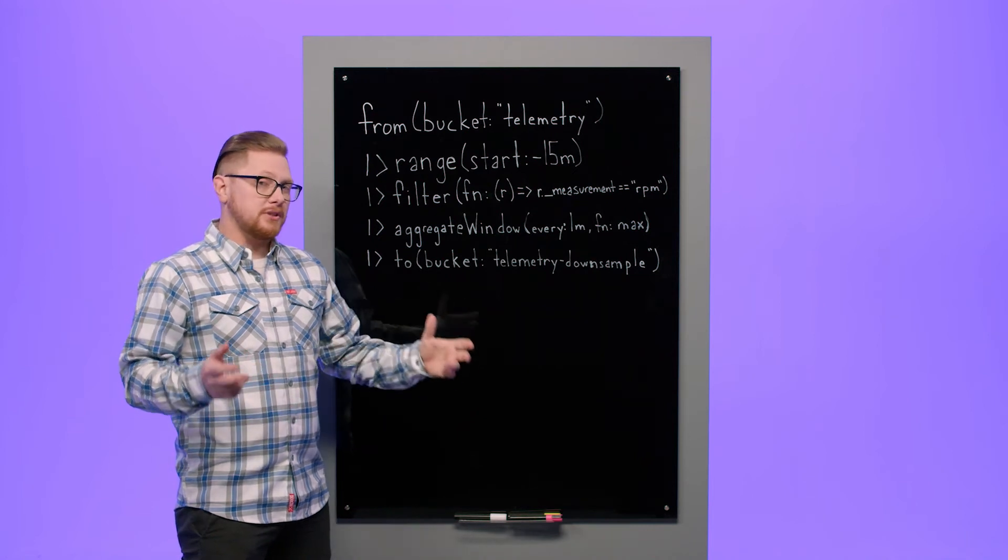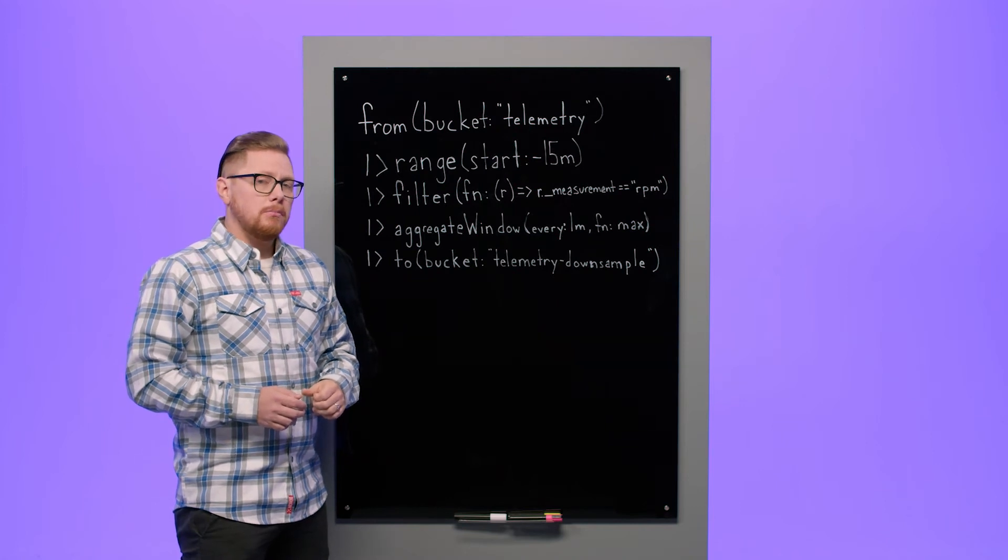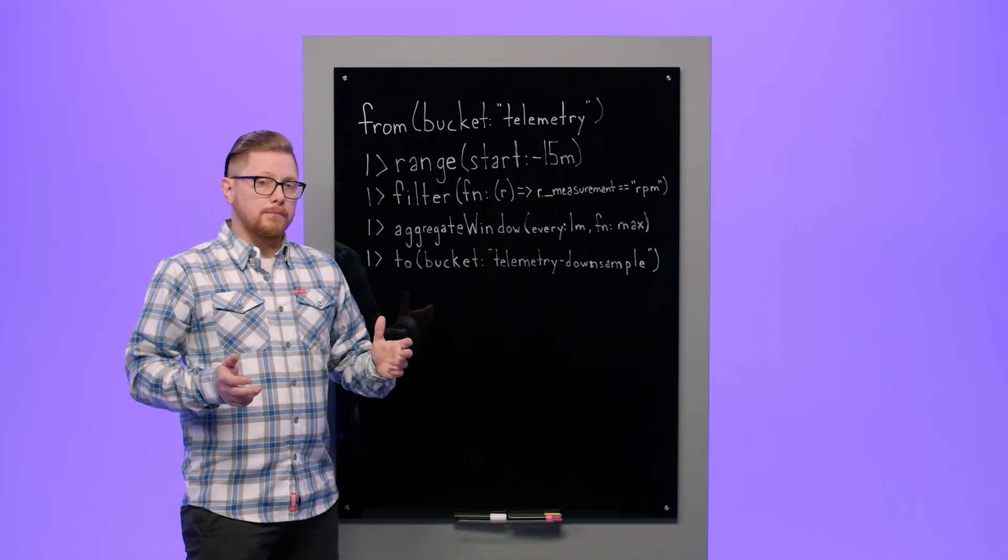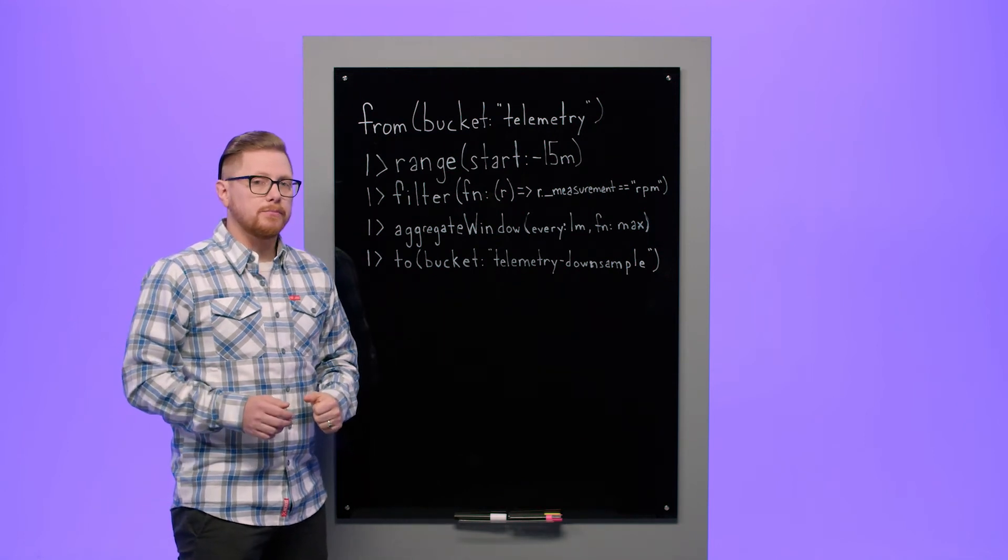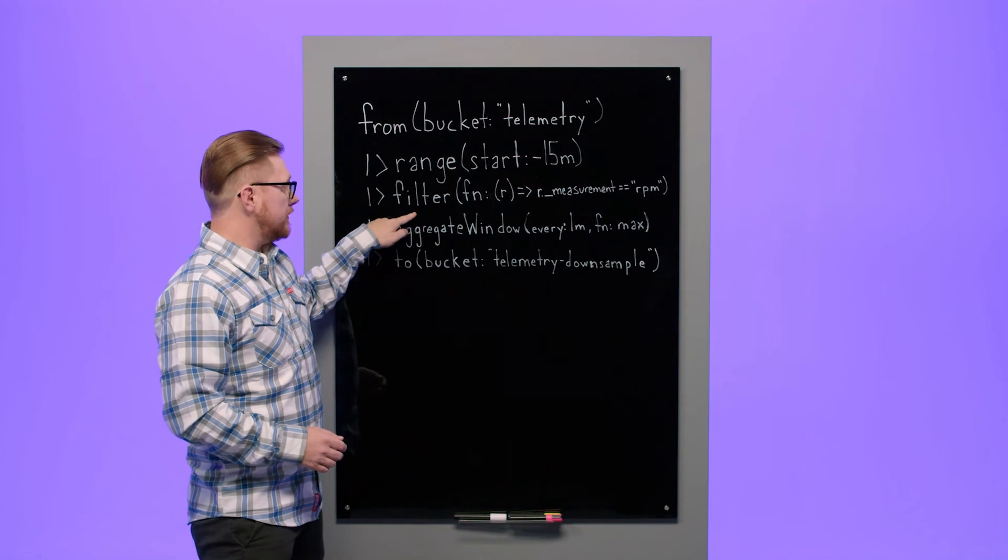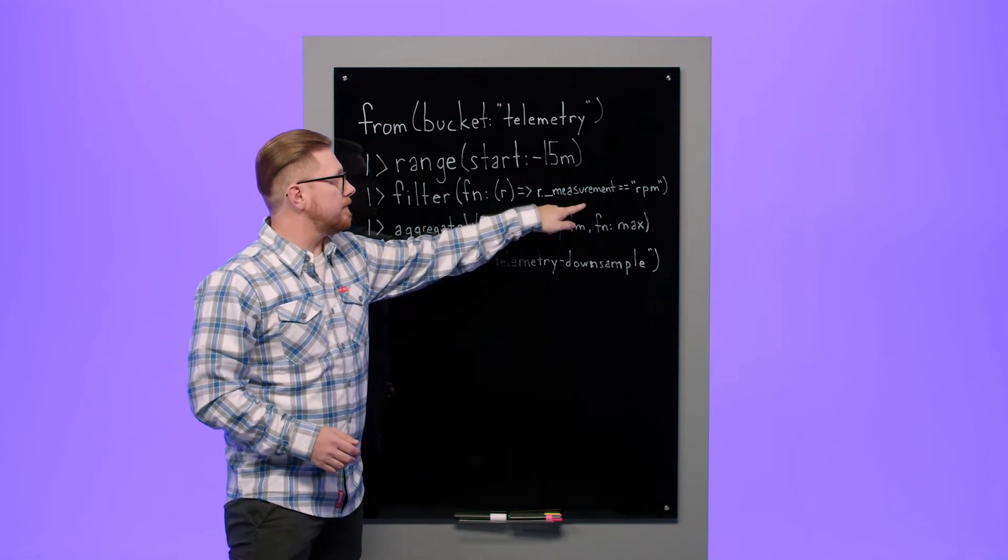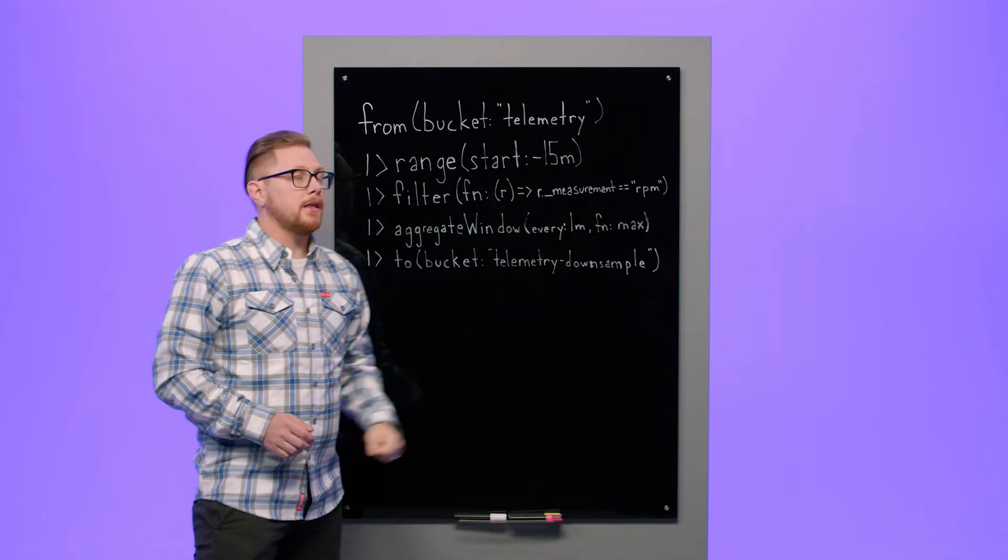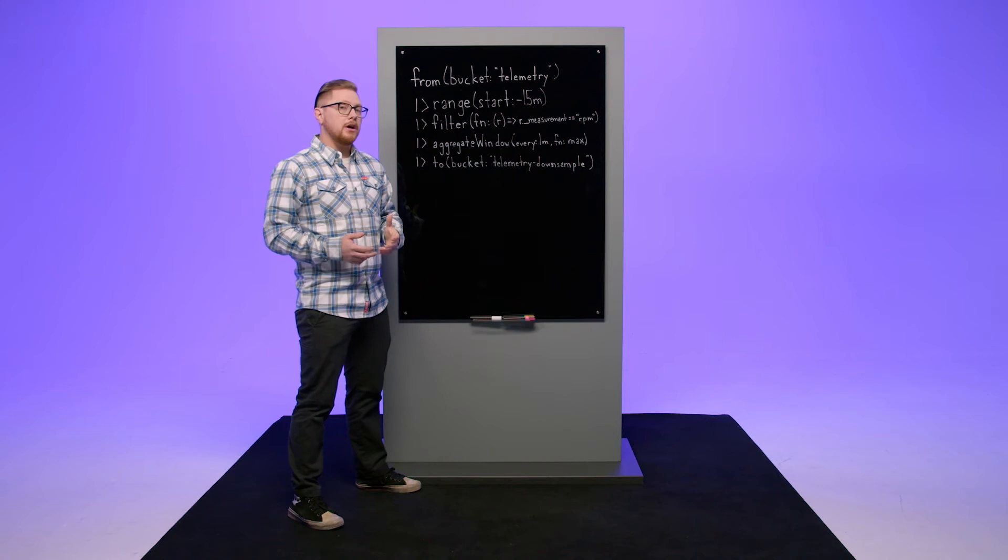Maybe we want a specific time slice, like all the data from last week. Maybe we want a specific measurement or all the data with a specific tag. In this example, we get the last 15 minutes of data using the range function, and then we filter the data using the filter function and passing it a function that checks to see if measurement is RPM. This will get the last 15 minutes of data from the measurement RPM.